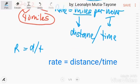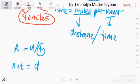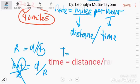Mag-transpose lang tayo kasi ang kailangan natin kunin ay yung time. I-transpose mo muna yung time sa kabila. Hindi ba niya na hinahanap natin yung time? Ibalik mo si rate sa kabila. Mag-divide ka para makansil siya sa kabila para ma-isolate si time. So, ang formula ngayon ay time equals distance over rate.